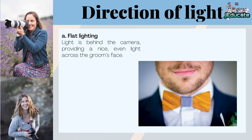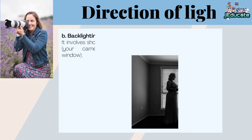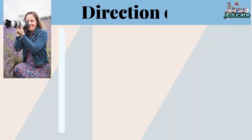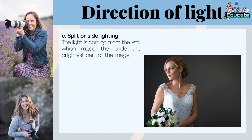Some directions of light applied by the photographer: A — Flat Lighting: light is behind the camera, providing a nice, even light across the subject's face. B — Backlighting: it involves shooting into the light, where your camera faces the window. C — Split or Side Lighting: the light is coming from the left, which makes the subject the brightest part of the image.